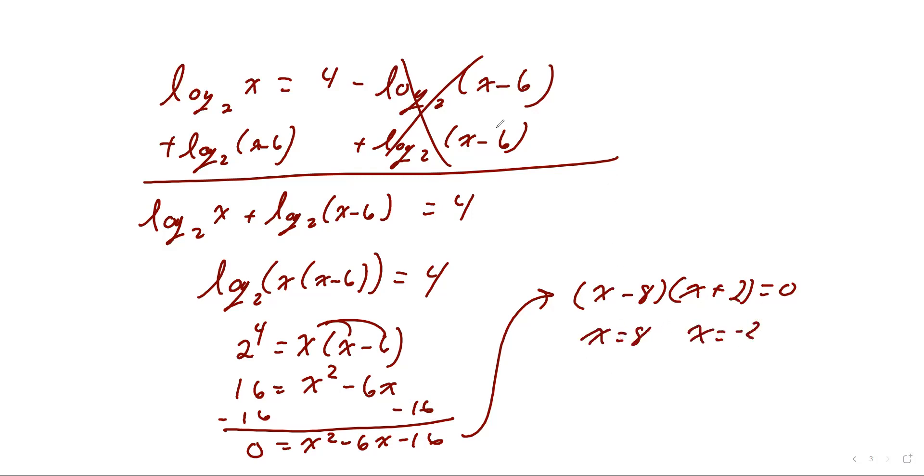But we need to check it. So I'm going to come back over here. x equals 8, 8 minus 6 is 2, that works out. If I plug in negative 2 for x, I get a negative 2. So therefore, that one does not work out. Because it has to be, when I plug it in, it has to be greater than 0.